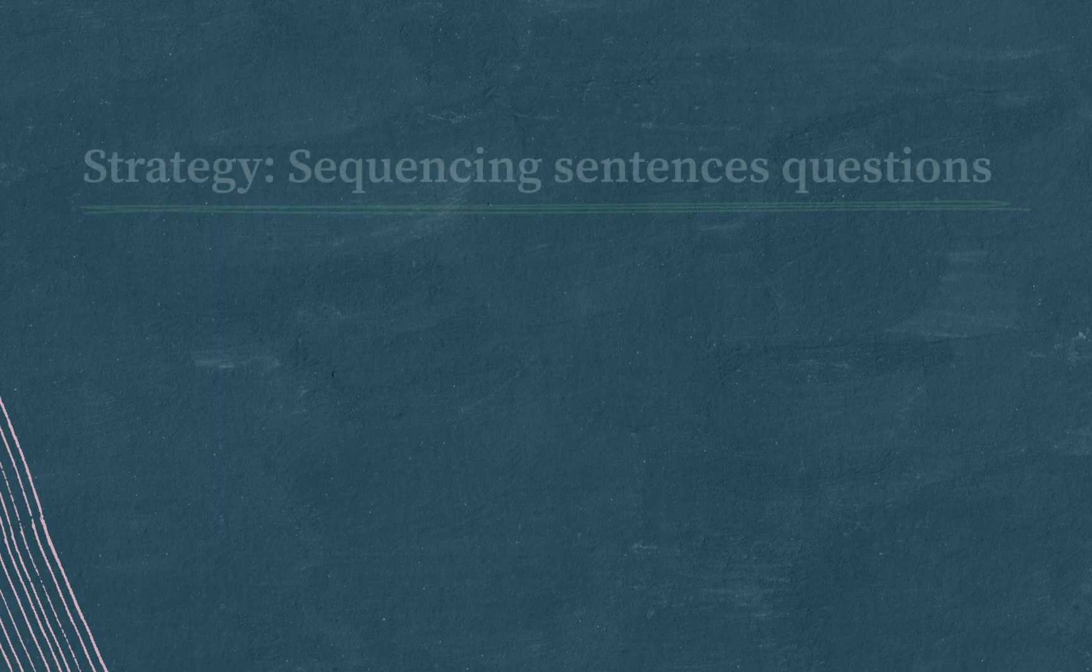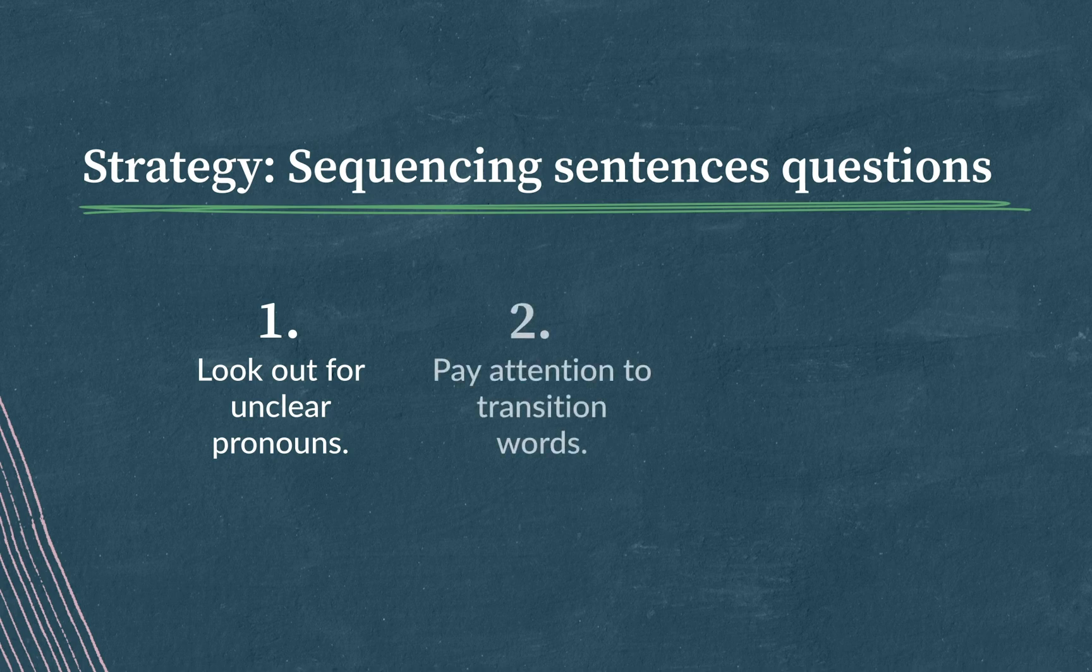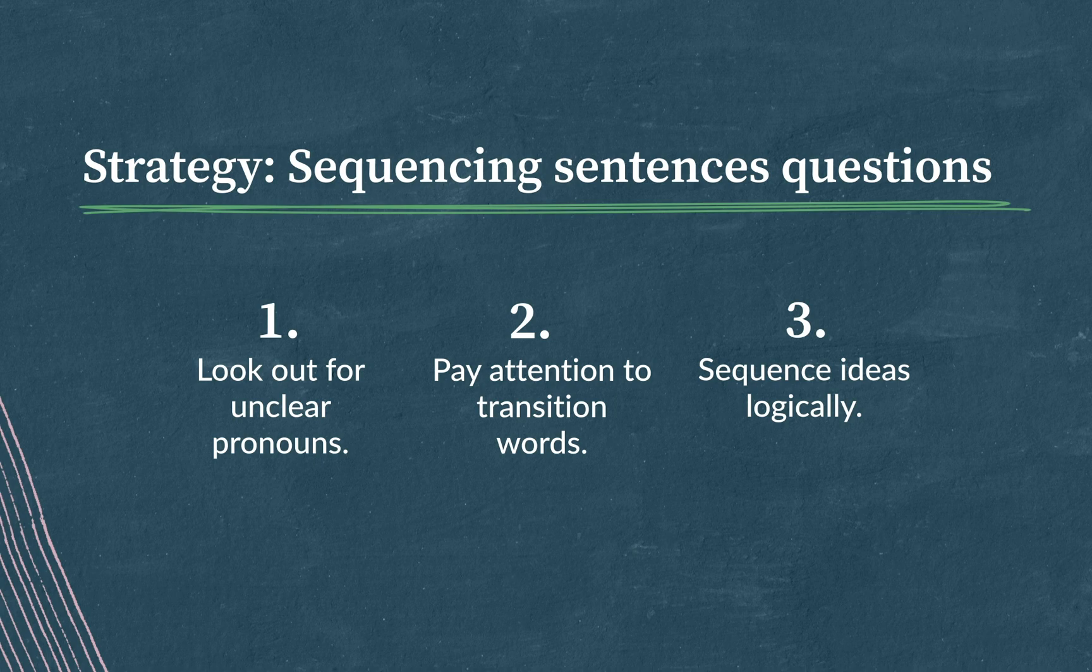So you can see the strategies that I modeled in this worked example. I was looking for unclear pronouns and transition words or phrases because that can help me identify if there's a weird order of sentences, if the sequence of sentences is scrambled. And once I found the slightest hint of weirdness, that led me straight to the answer.